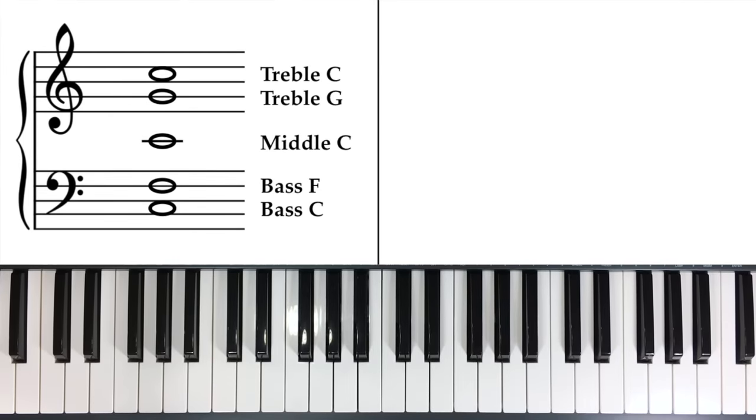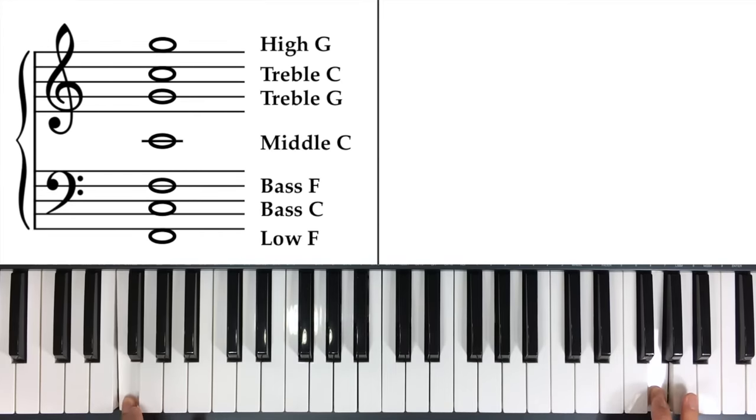All right, now let's expand out again to our next two landmarks. And what we have is high G and low F. And visually, they look very similar too. High G is touching the top of the clef in treble clef, and low F is touching the bottom of the bass clef, right? It's the space that's touching the outsides.